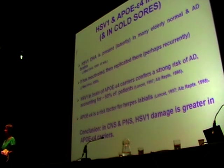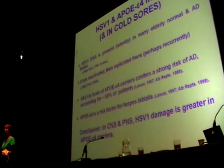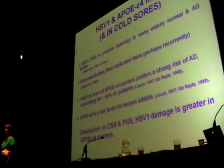Our results were, just to summarise: we used PCR to look for herpes simplex virus DNA in post-mortem human brains. What we found was that it was present in latent form in many elderly normal and Alzheimer's disease brains. And we found, by looking at antibodies to the virus in the CSF, that there was evidence that it had reactivated and replicated there — showing that it had reactivated and become an acute infection, possibly recurrently.